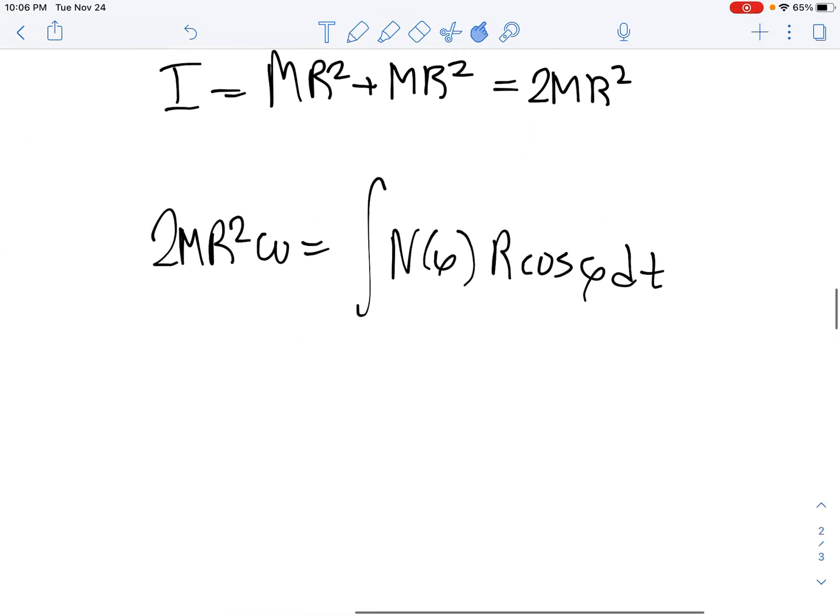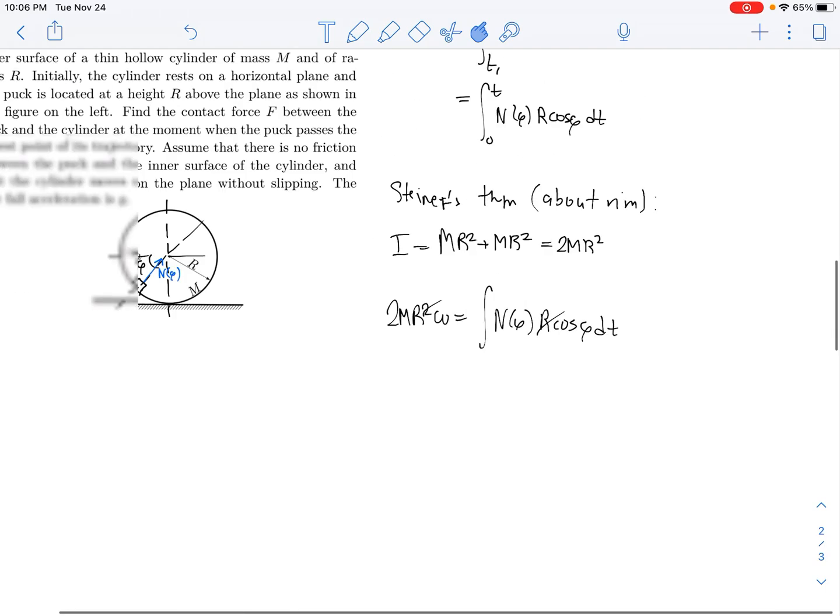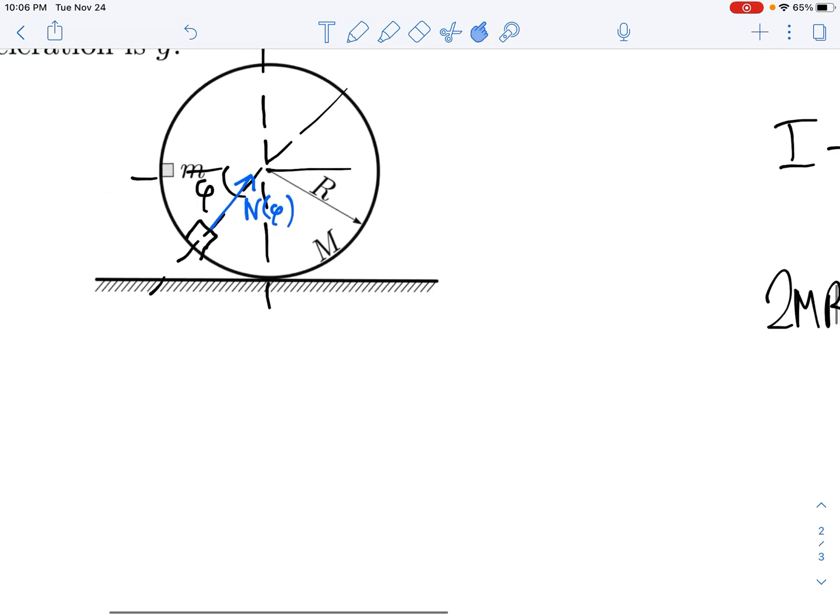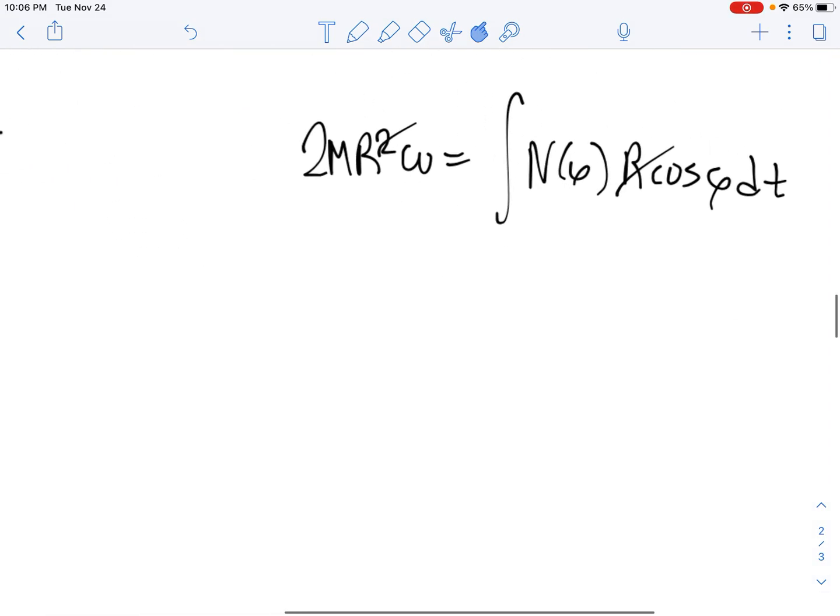Since we're taking the angular impulse about the bottom mass, we should use Steiner's theorem to find the moment of inertia about the rim of this mass. About the symmetry axis of a cylinder, the moment of inertia is MR squared. We're moving out towards the distance of R, so that's MR squared plus another MR squared equals 2MR squared. This is our moment of inertia. The momentum is I omega, so we can say that 2MR squared omega equals the integral of N of phi R cosine of phi dt.